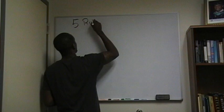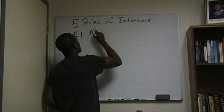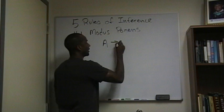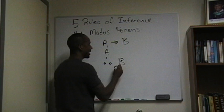Five rules of inference. The first rule is known as modus ponens. Modus ponens says the following: if A happens, then B will happen. A happens. These three dots means therefore — therefore, B will happen.